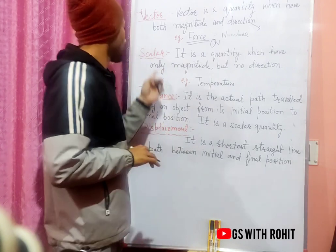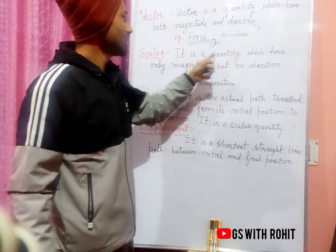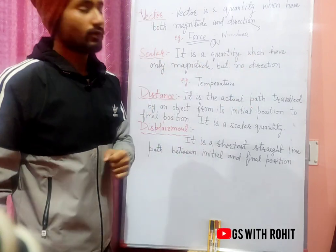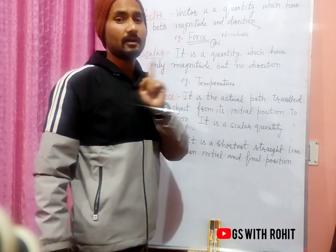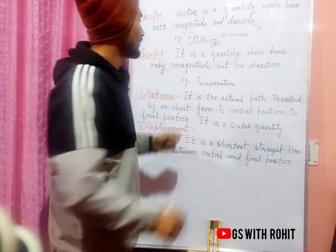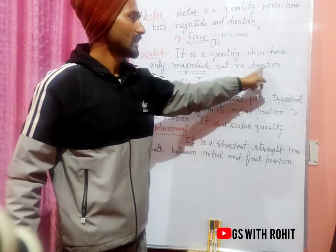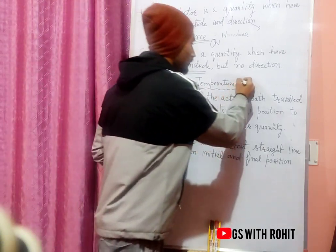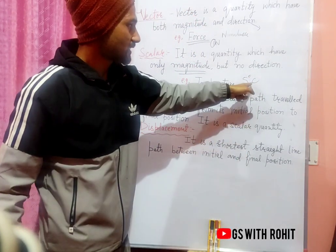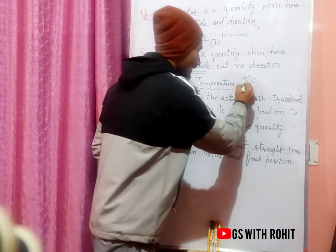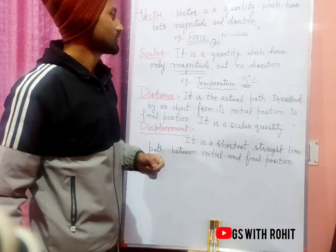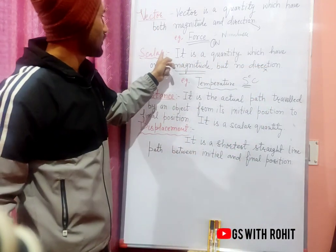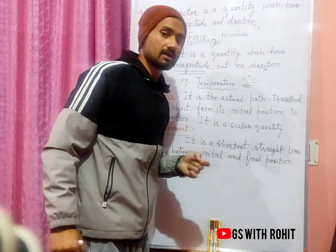Scalar quantity is a quantity which has only magnitude but no direction. For example, temperature — if it is cold, I will say 5 degrees Celsius. I will say no direction; this number is the magnitude. So scalar quantities have only magnitude but no direction. We will call these scalar quantities. For example, temperature has no direction.